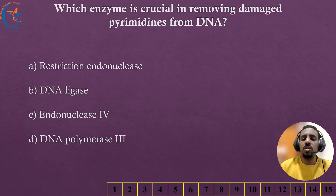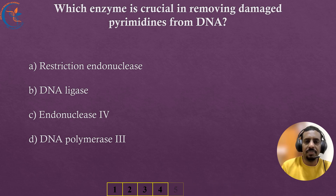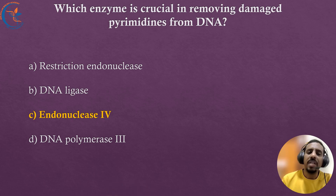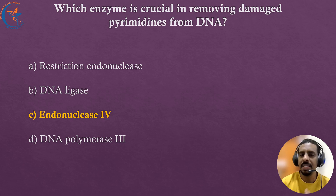Which enzyme is crucial in removing damaged pyrimidines from DNA? The correct answer is Endonuclease IV. Endonuclease IV is involved in base excision repair, helping remove damaged pyrimidines and maintaining genomic stability.